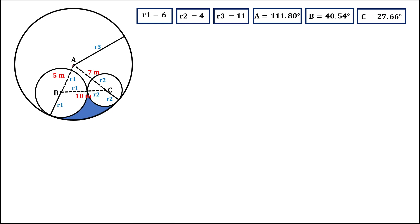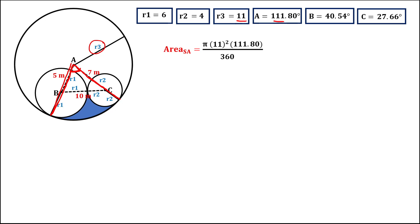First, we find the area of sector A using the formula: pi times radius squared times angle over 360. The radius of circle A is 11, and angle A is 111.80 degrees, so the area of sector A equals 118.05.